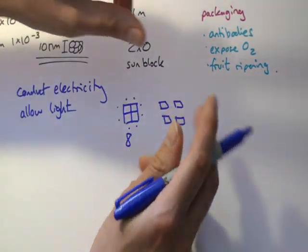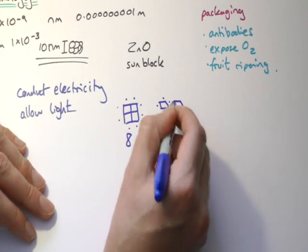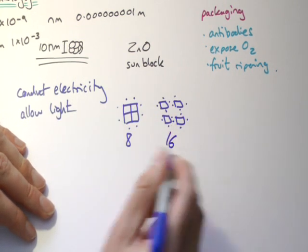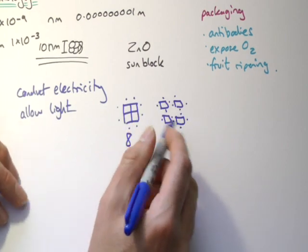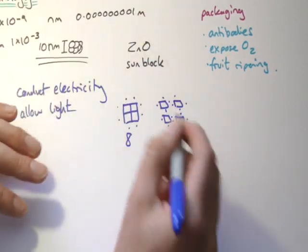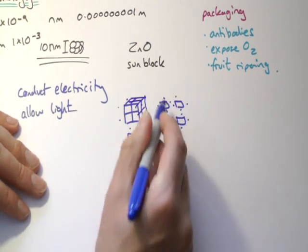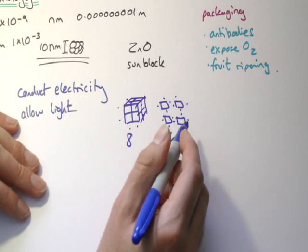If I took the same size block but I broke it apart, the surface area, if you like, I know it's not in 3D but the perimeter of it would be one, two, three, four, five, six, seven, eight, nine, ten, eleven, twelve, thirteen, fourteen, fifteen, sixteen. So you can see that by breaking something apart I expose more of it. And if this was a three dimensional block rather than the 2D one, you've increased the surface area that's available.